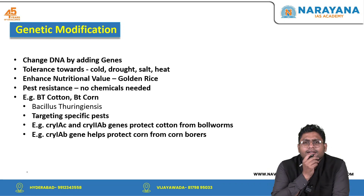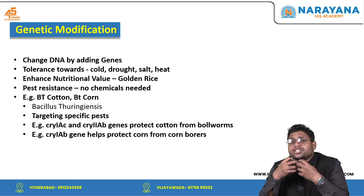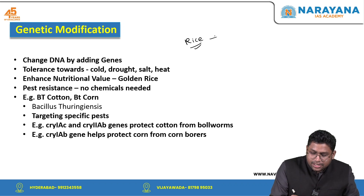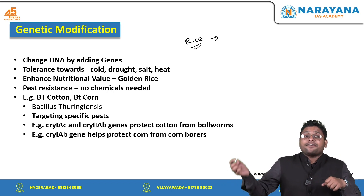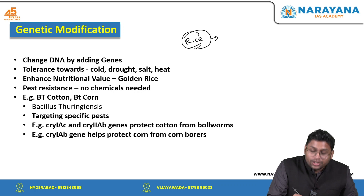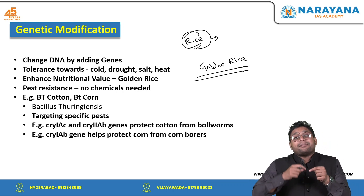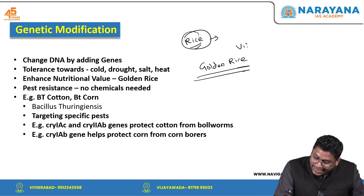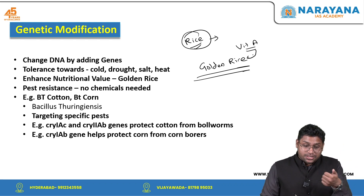Second, we can improve the nutritional quality of a food crop. For example, rice does not naturally give us Vitamin A. We can add Vitamin A into that rice. If you read about golden rice, it is very famous because we have genetically made changes in it and added Vitamin A into this particular rice. This is a very good application for us.